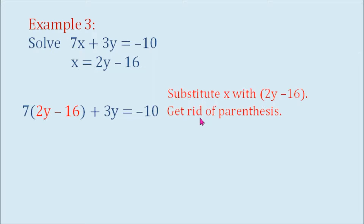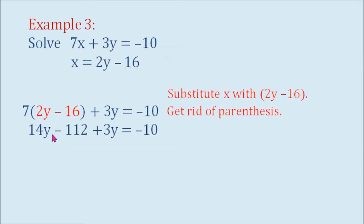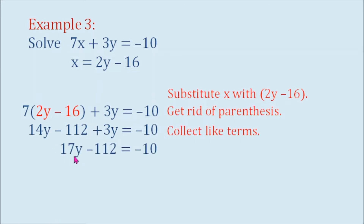So it becomes 7 times the quantity (2y minus 16) plus 3y equals negative 10. Next, we get rid of the parentheses: 7 times 2y and 7 times negative 16, which gives us 14y minus 112. Then plus 3y equals negative 10. Collecting like terms, 14y and 3y gives 17y, so we have 17y minus 112 equals negative 10.